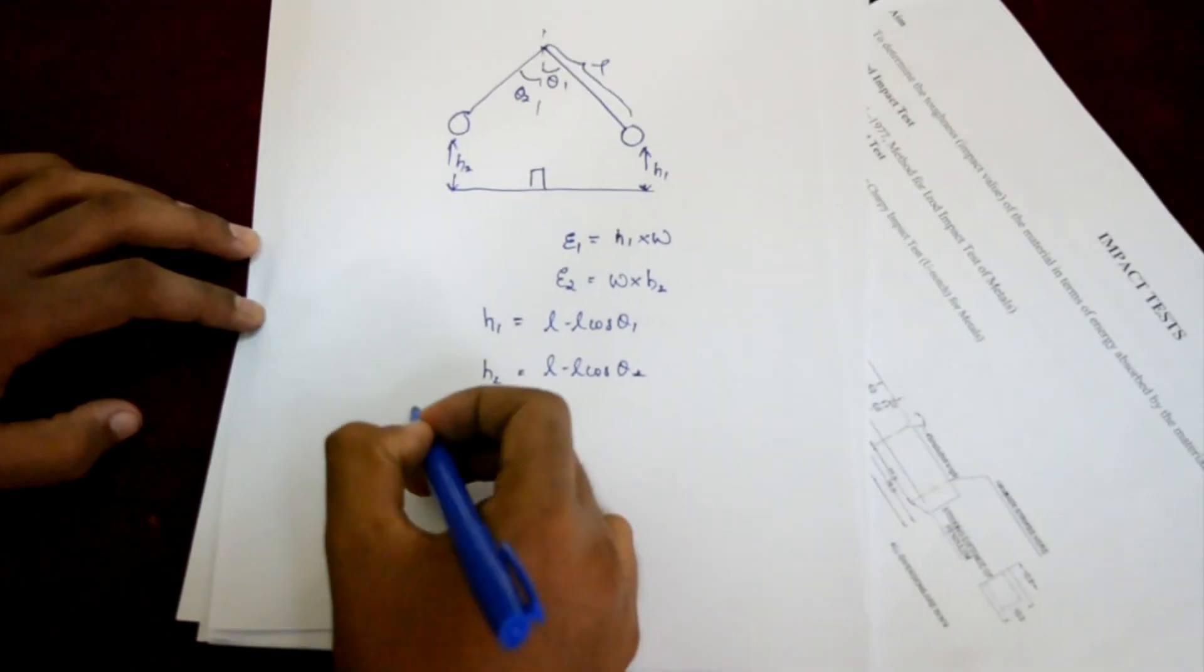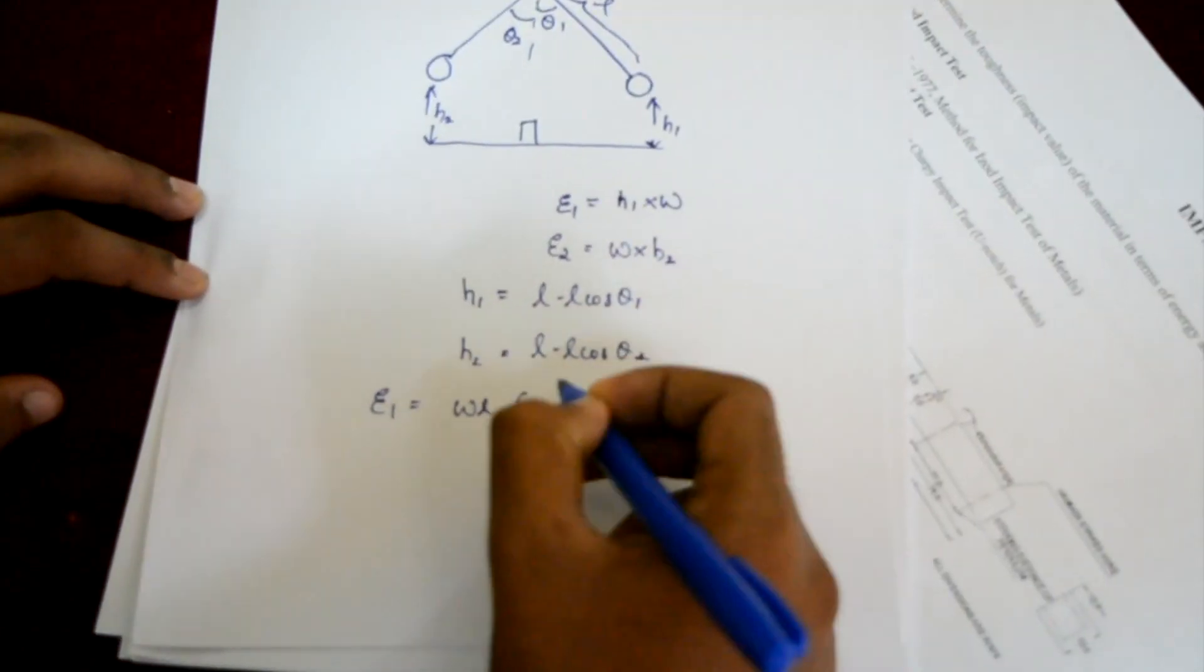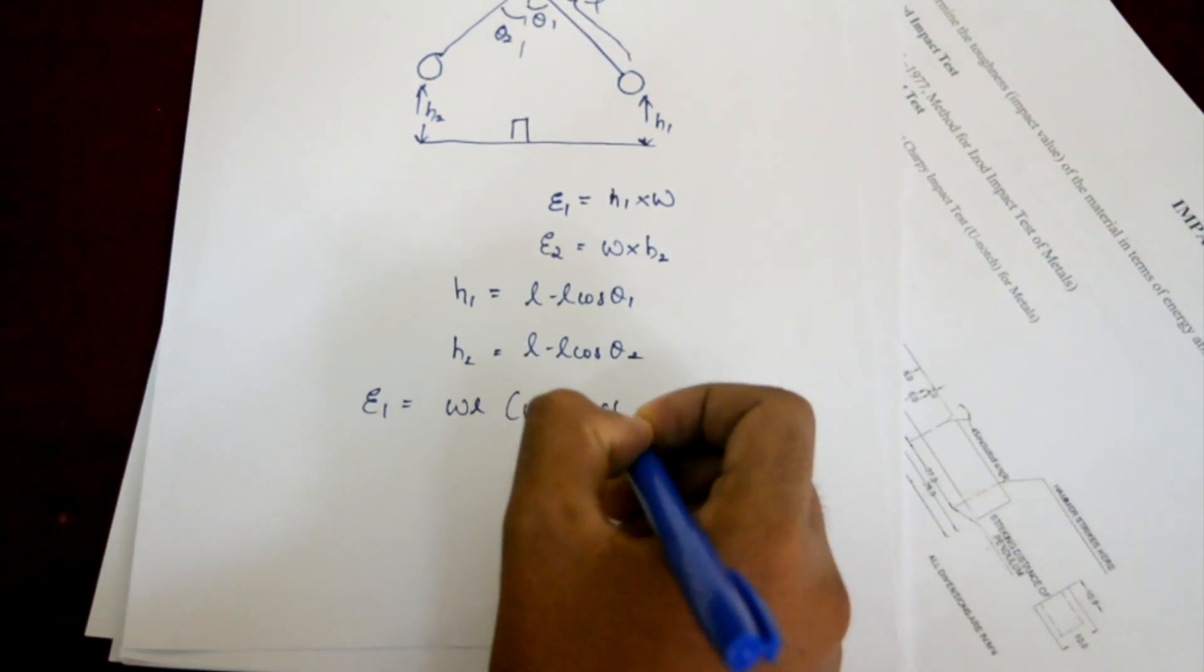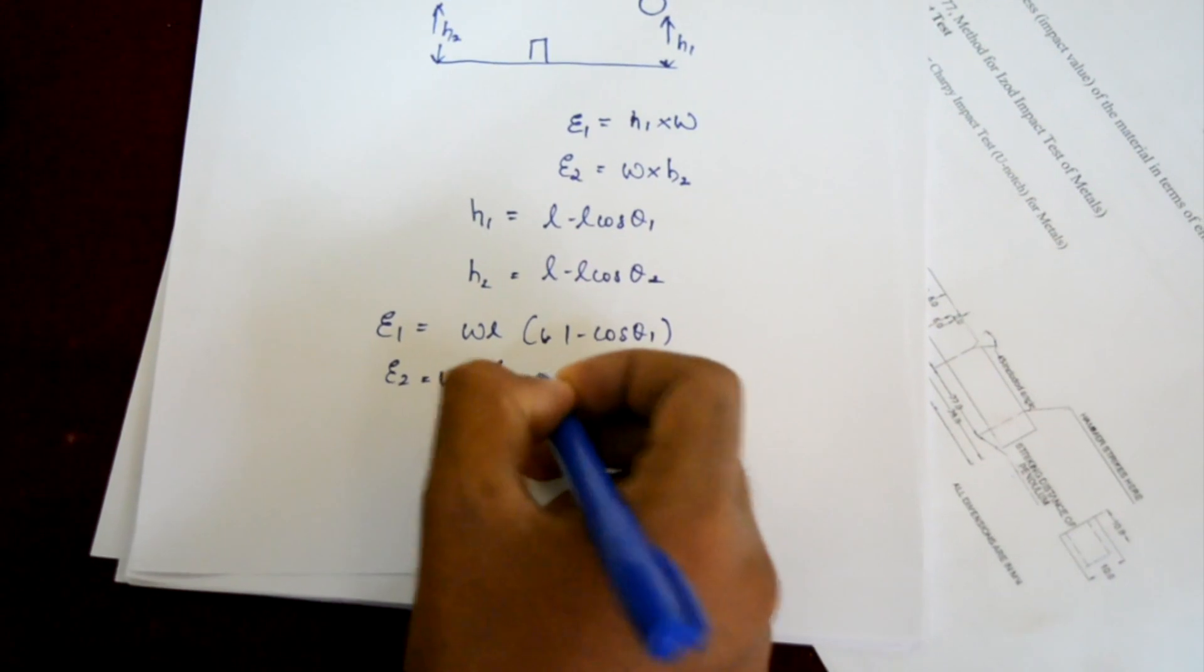From this we know that E1 is equal to WL times (1 minus cos θ1) and E2 is equal to WL times (1 minus cos θ2).